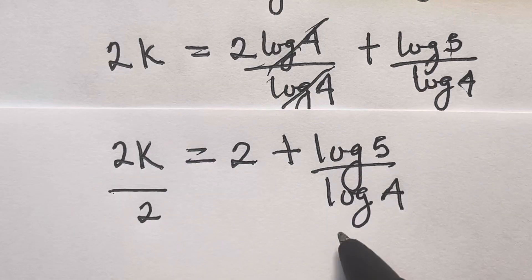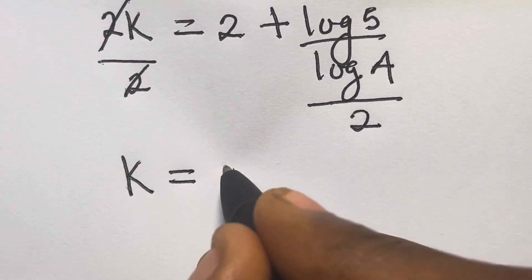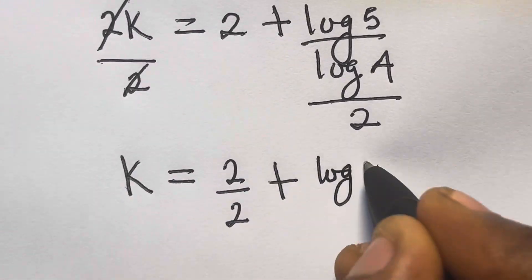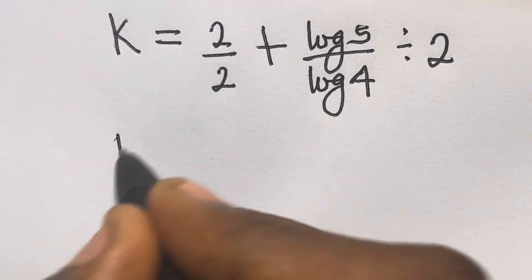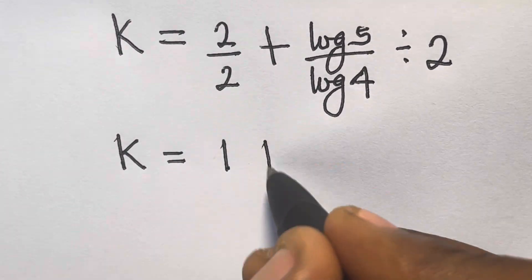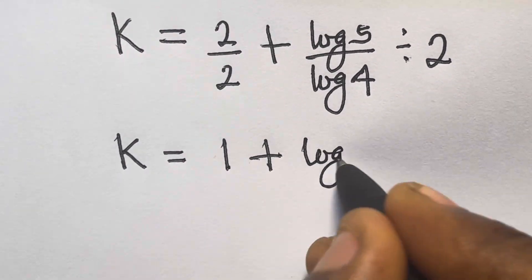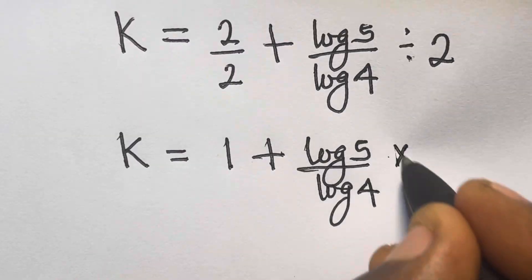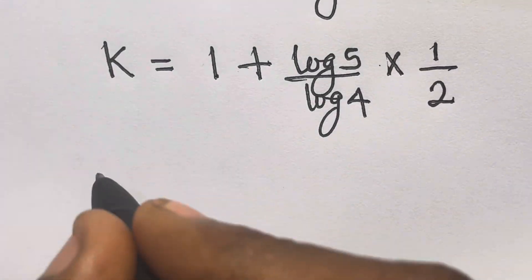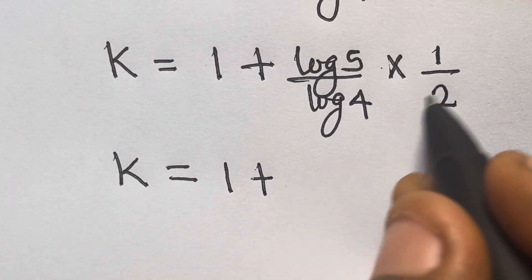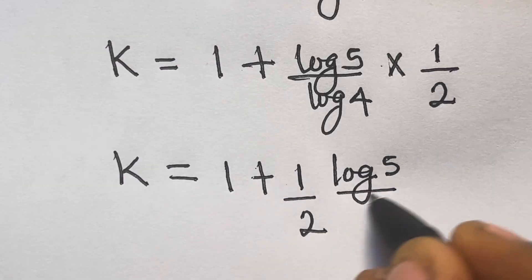From here, we can divide both sides by 2. So we have k equals 2/2 plus (log 5 / log 4) divided by 2. Simplifying: k equals 1 plus (1/2)·(log 5 / log 4).